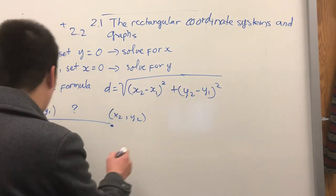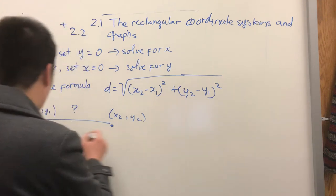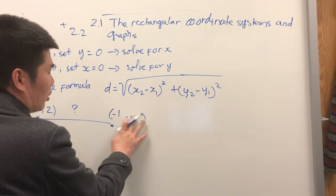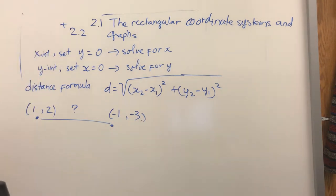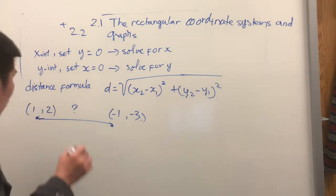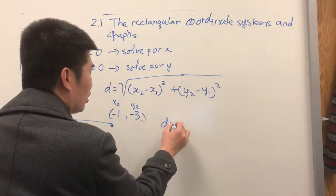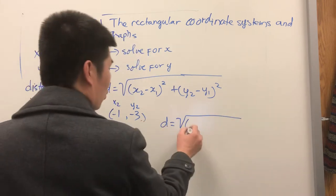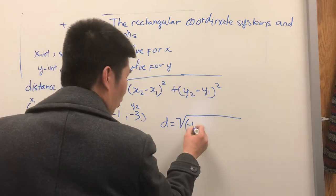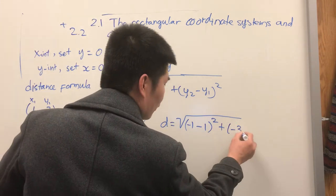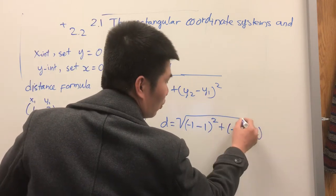For example, if I give you the points (1, 2) and (-1, -3), what's the distance between these two points? I'll label them x1, y1 and x2, y2 to keep organized. Applying the formula: d equals the square root of (-1 minus 1) squared plus (-3 minus 2) squared.